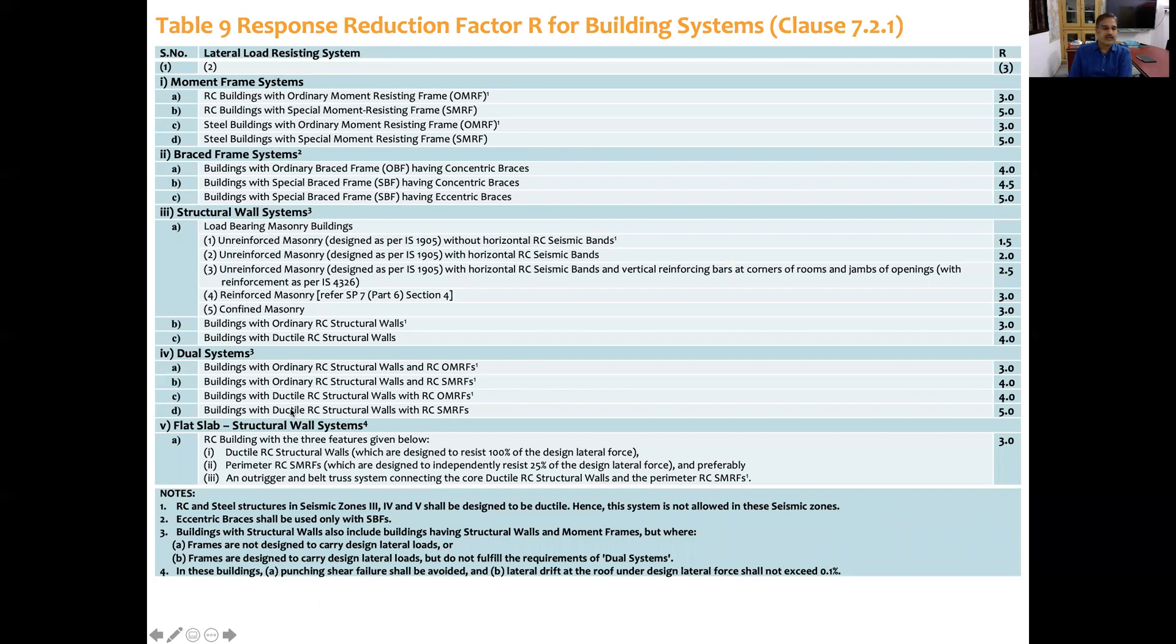Code recommends reduction factor for five lateral load resistance systems. First is moment frame system. In moment frame system, there are two things: RC building and steel buildings. In RC building, there's ordinary moment resisting frame and special moment resisting frame, and in steel also same thing. Since ordinary moment resisting frame is not allowed in zone 3, zone 4, and zone 5, we have to go for ductility of response reduction factor of 5.